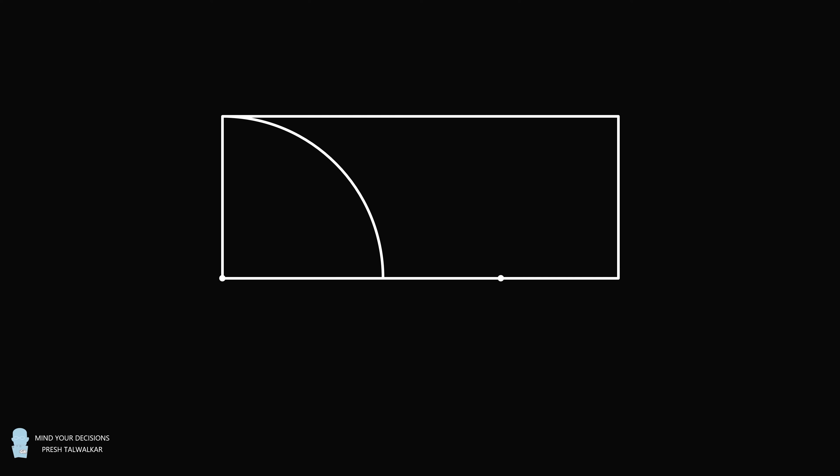Problem 1. There's a rectangle. A quarter circle is centered at the lower left corner of the rectangle and has a radius equal to the height of the rectangle. For the remaining distance on the base, construct a semicircle at the midpoint of the remaining distance, and it goes from the endpoint of the quarter circle to the endpoint of the base of the rectangle.